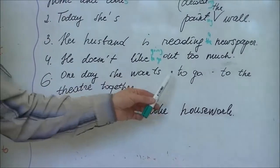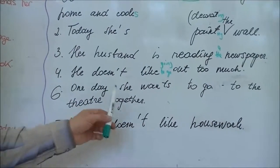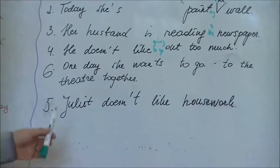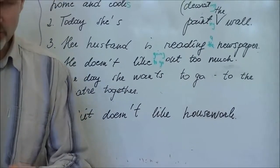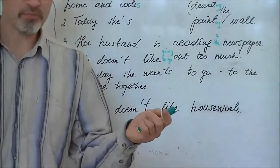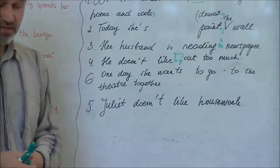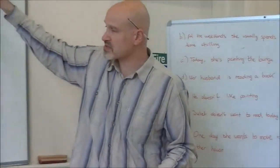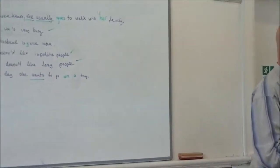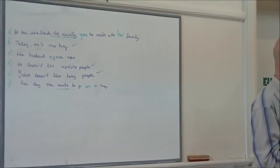One day she wants to go to the theatre together, that's nice. Juliet doesn't like housework, good for her. So here we are fixing problems with some verb patterns, we are fixing problems with present simple sentences, present continuous sentences. This is really important.